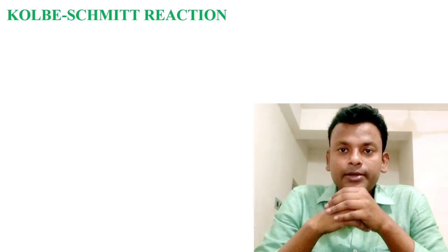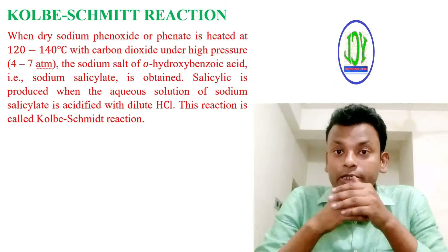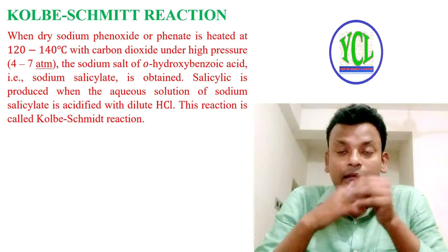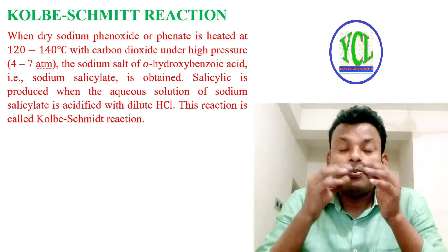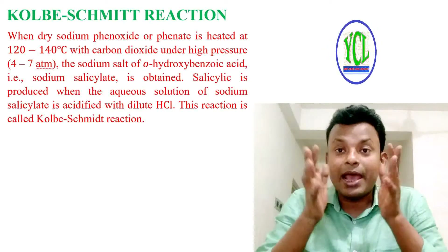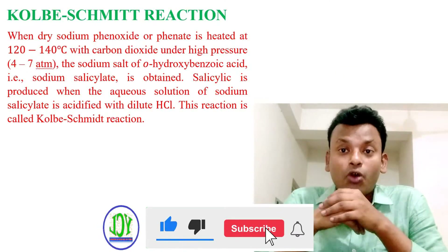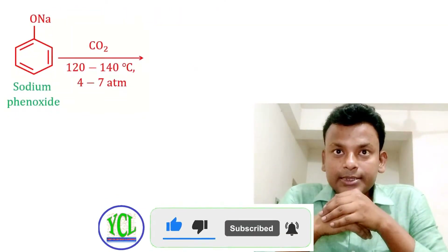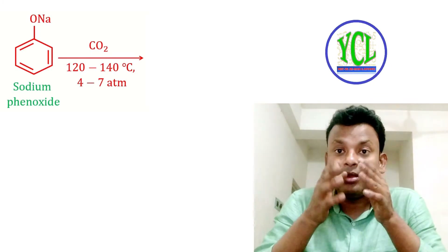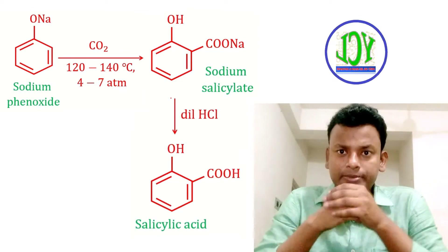Kolbe-Schmidt reaction: when dry sodium phenoxide is heated at 120 to 140 degrees centigrade with carbon dioxide under high pressure of 4 to 7 atm, the sodium salt of ortho-hydroxybenzoic acid — that is sodium salicylate — is obtained. Salicylic acid is produced when the aqueous solution of sodium salicylate is acidified with dilute HCl. This reaction is called the Kolbe-Schmidt reaction. Sodium salicylate on hydrolysis gives salicylic acid.